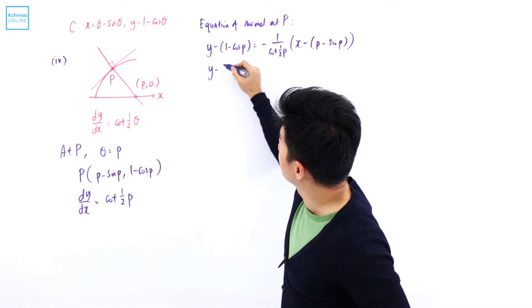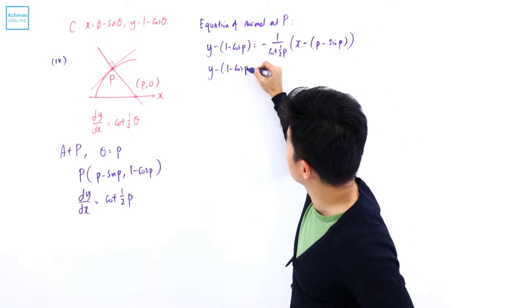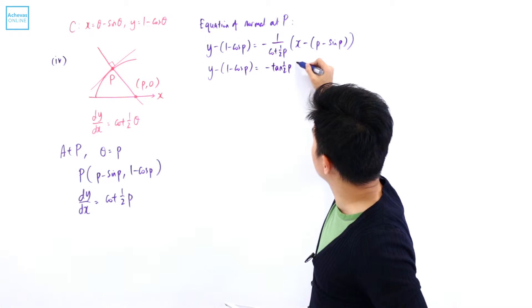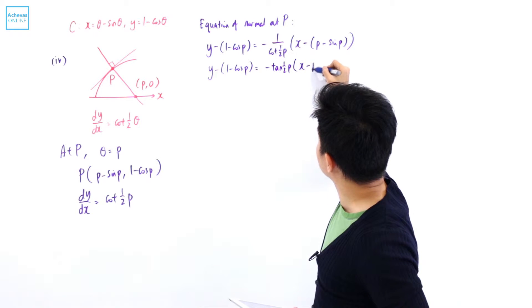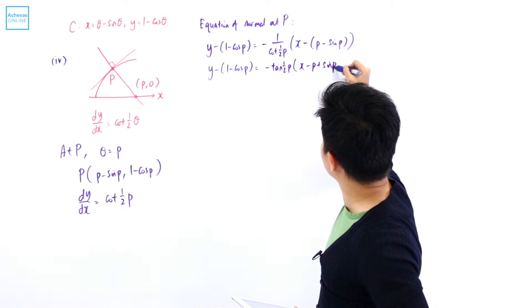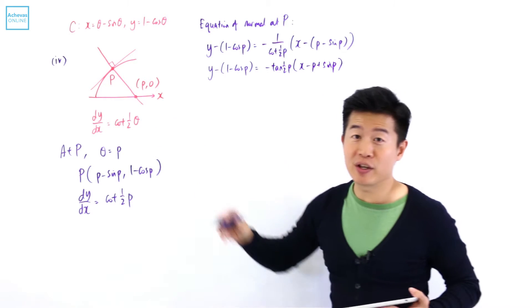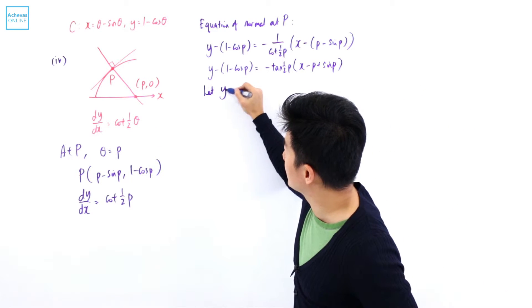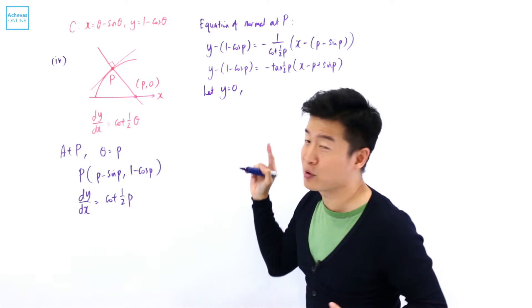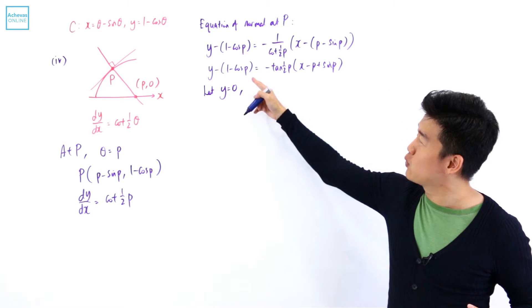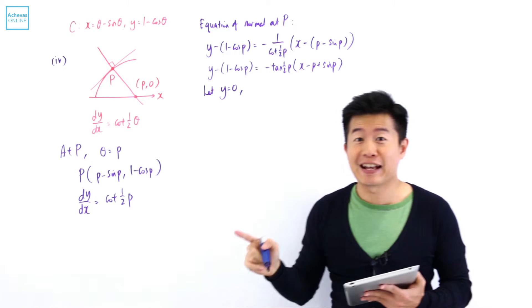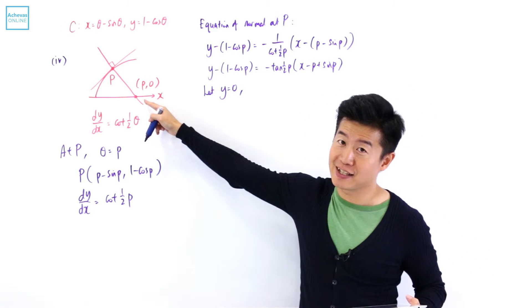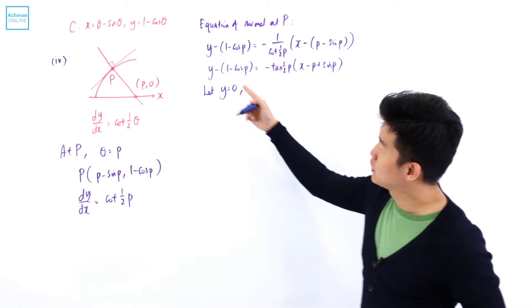So y minus (1 minus cosine P) equals minus tangent of half P times (x minus P plus sine P). At the x-intercept, y equals 0. By letting y equal 0, we want to show that x is equal to P, because that means the x-intercept is at the point P₀.